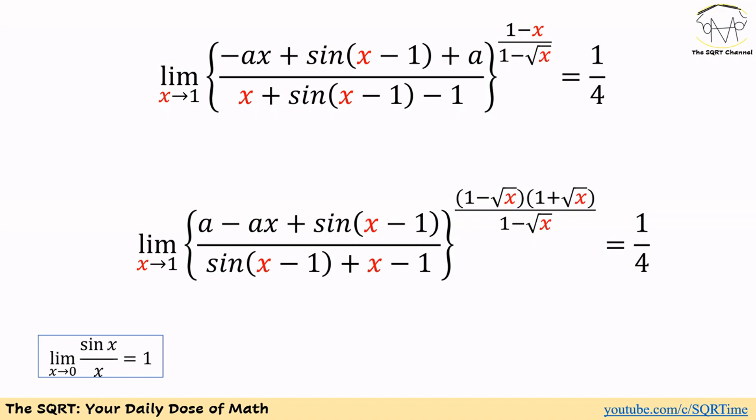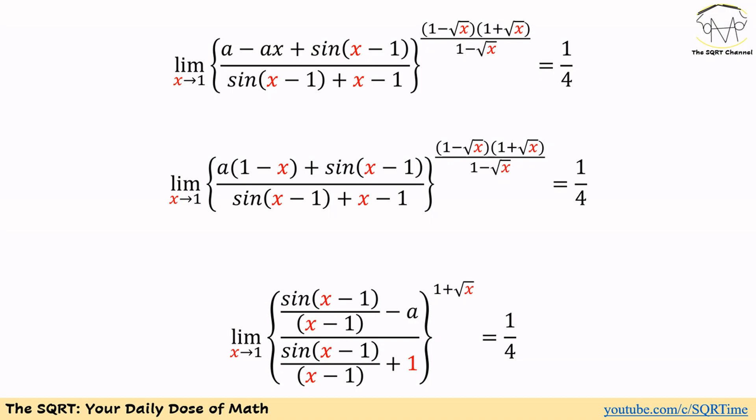First, I'm going to rearrange the numerator. We have negative a·x and a, which I'll rewrite as a minus a·x, and then write sine of (x minus 1) as is. For the denominator, I'll write sine of (x minus 1) as is, and rearrange x and negative 1 as x minus 1. For the exponent, I'll write 1 minus x as (1 minus square root of x) times (1 plus square root of x), keeping everything else as is. Now simplifying: we factor out a from (a minus a·x) to get a times (1 minus x).